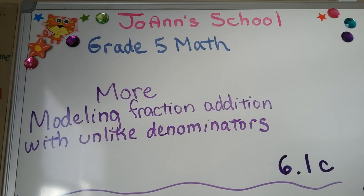We're going to be talking more about modeling fraction addition with unlike denominators. We're at 6.1c, and there's a 6.1a and b that are linked in this description if you need it.